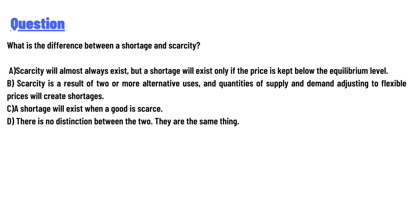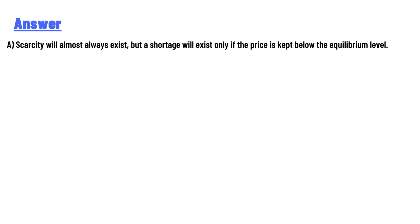Option C: A shortage will exist when a good is scarce. Option D: There is no distinction between the two — they are the same thing. The answer to the question is A: a scarcity will almost always exist, but a shortage will exist only if the price is kept below the equilibrium level.